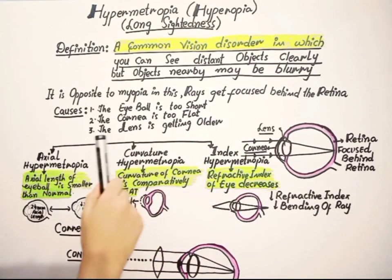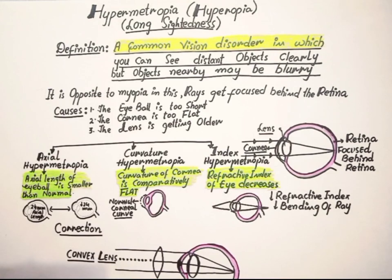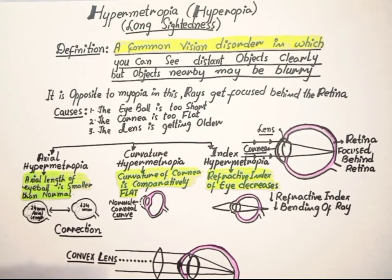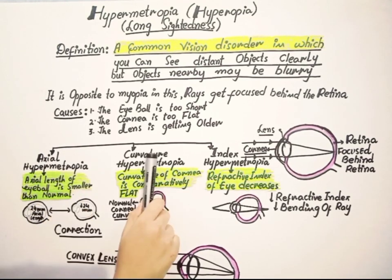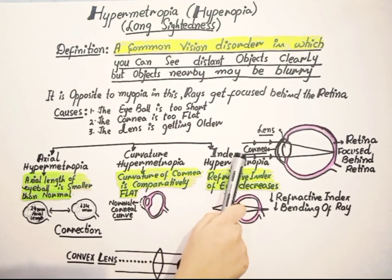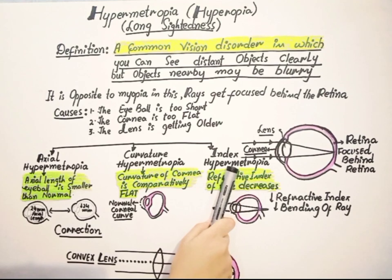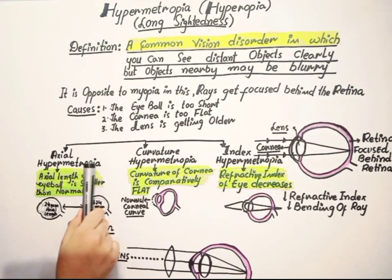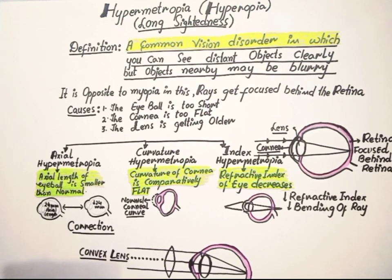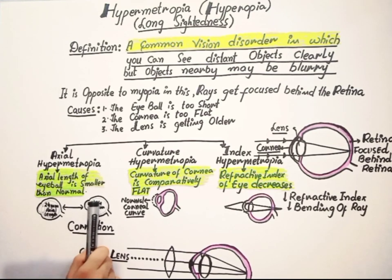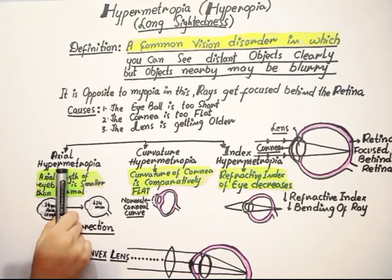This hypermetropia may be caused due to axial, due to the curvature of eye, curvature hypermetropia, and due to the change in index which is called index hypermetropia. In this hypermetropia, the axial length of eyeball is too short. In normal condition, the axial length of eye should be 24 millimeters, and wherever it decreased from this 24 millimeters, then this hypermetropia will occur.